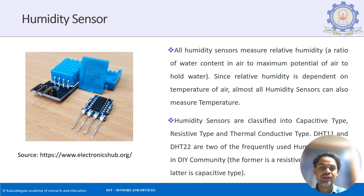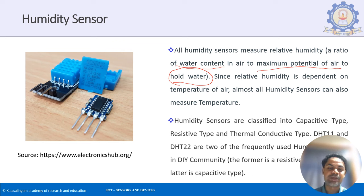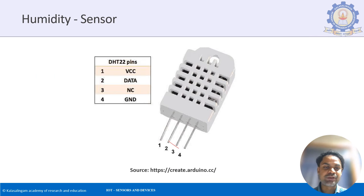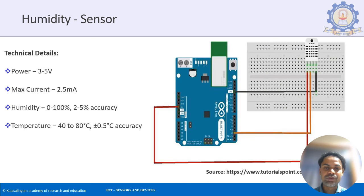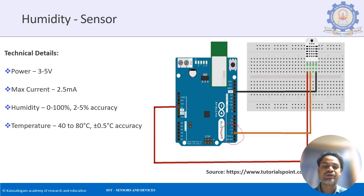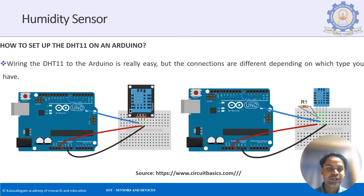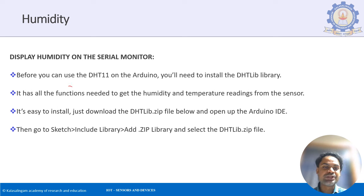The DHT measures the ratio of water content in air to the maximum potential the air can hold. It comes in two types: DHT11 and DHT22. To connect it to Arduino, the signal pin goes to the digital pin of Arduino, not the analog pin, along with supply and ground. When connected to pin 7, for example, it will display values on the serial monitor.